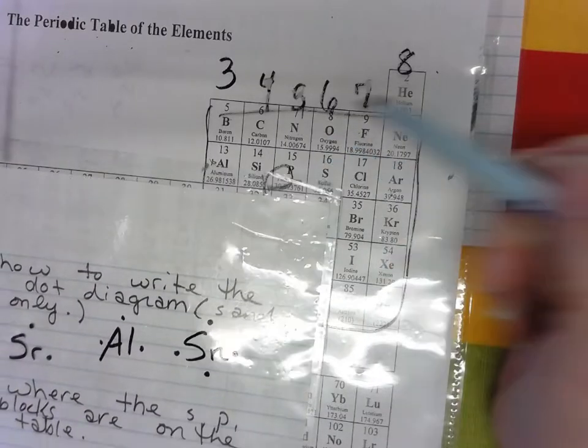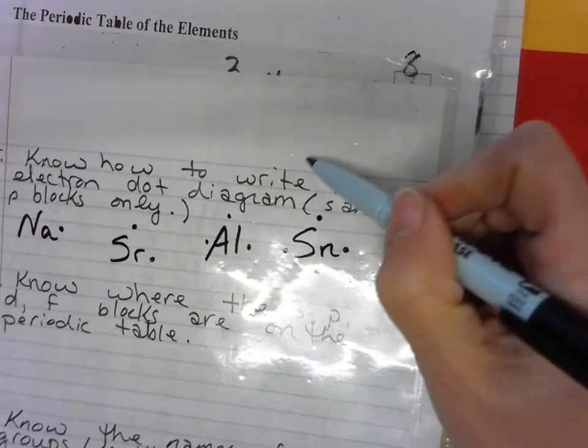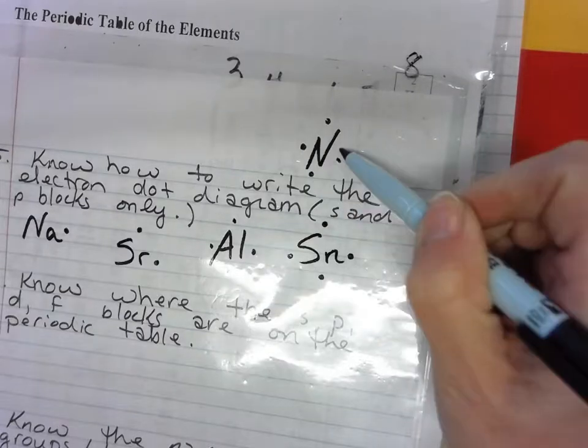Then nitrogen family, five valence electrons. We'd write one, two, three, four, five.